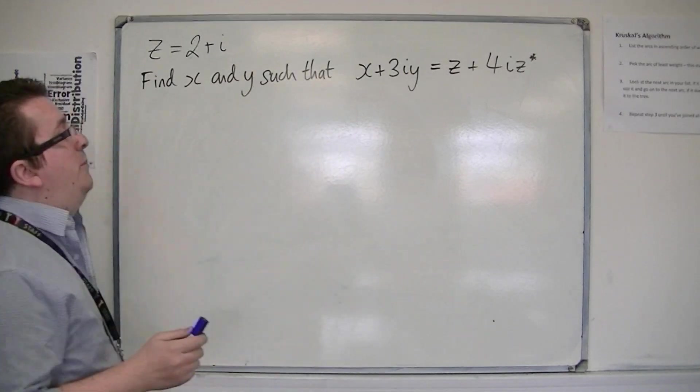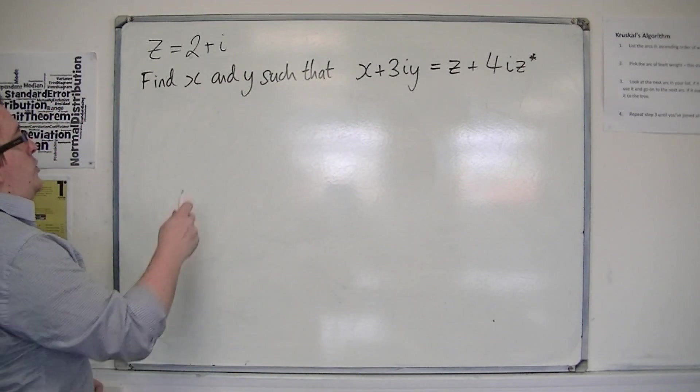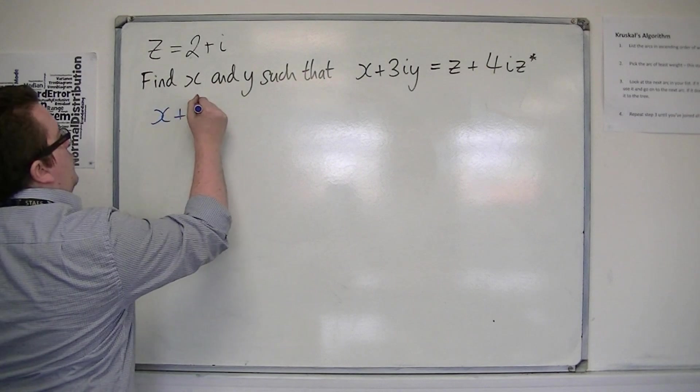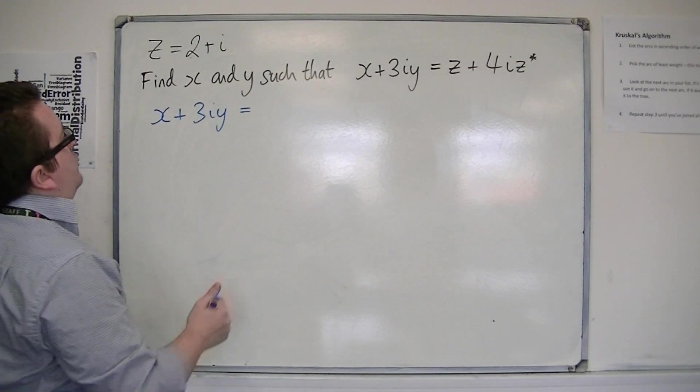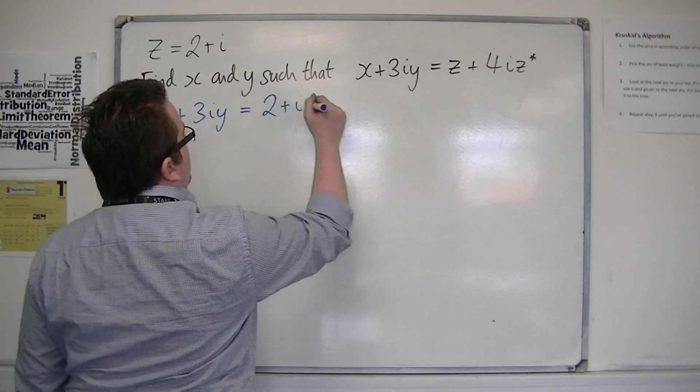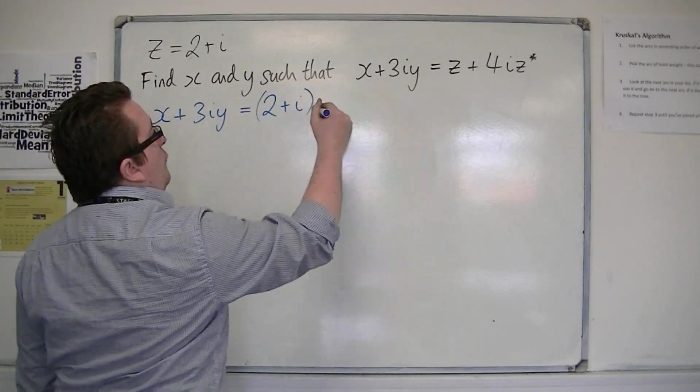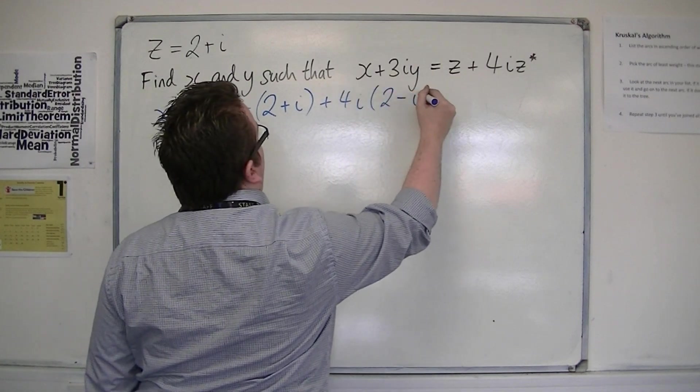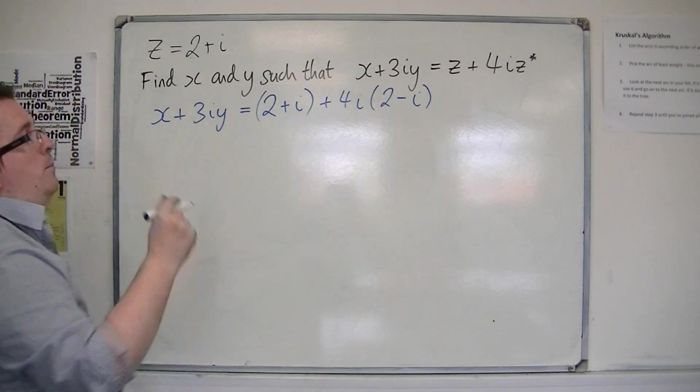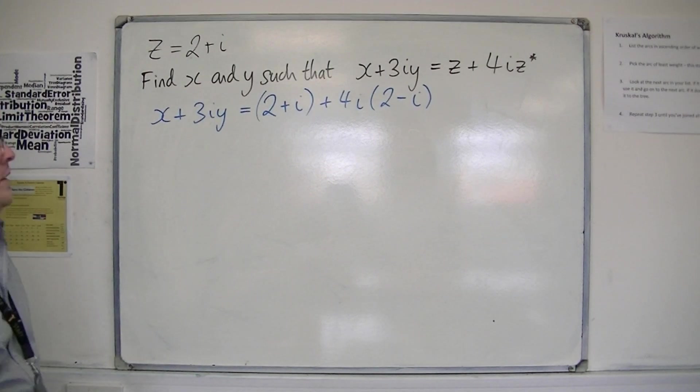So it's just a case of substituting z into this equation. We've got the x plus 3iy on the left hand side, I'm going to leave that alone for the moment. Then I've got 2 plus i for the z, and then I've got 4i times 2 minus i, because 2 minus i is the complex conjugate of z, the z star.